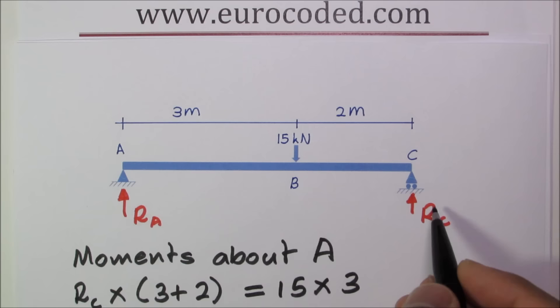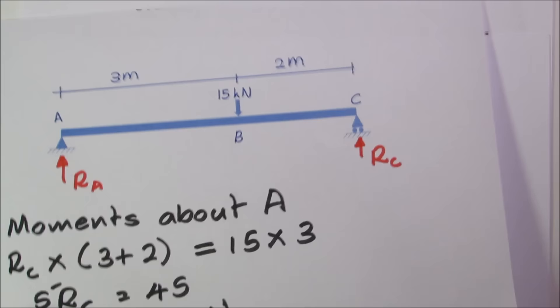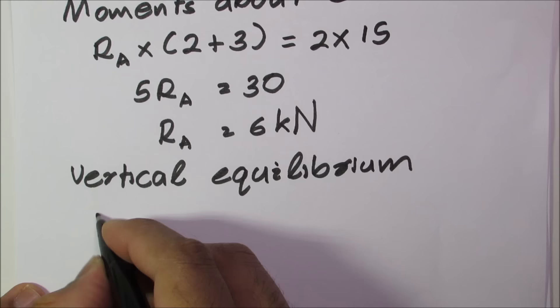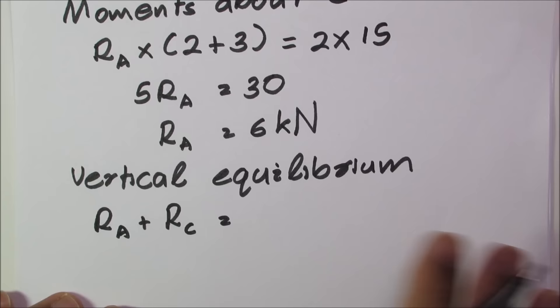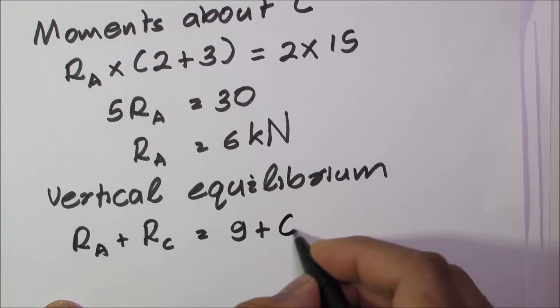Vertical equilibrium: when you add these two reactions RA and RC should be equal to 15 kilonewtons. You can write RA plus RC is equal to 9 kilonewtons plus 6 kilonewtons which is equal to 15 kilonewtons.